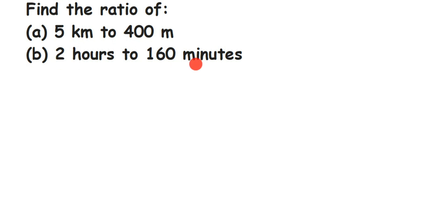How to solve this: whenever you're finding a ratio, we have to make sure that both the numbers are in the same unit. Here we have one in kilometers and one in meters — they are both measurements of distance, but one is in kilometers and one is in meters. So we have to make sure they are either completely in kilometers or in meters. We can either convert meters into kilometers, or convert five kilometers into meters.